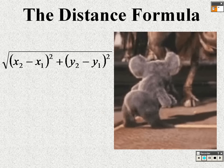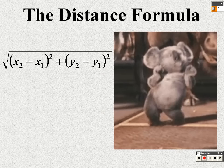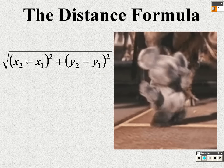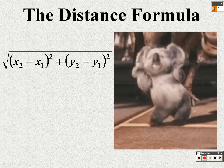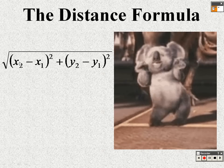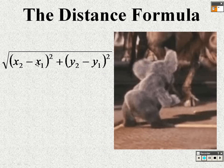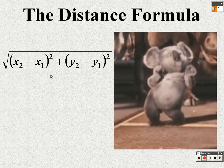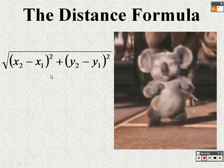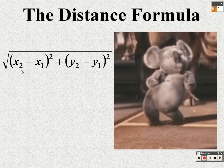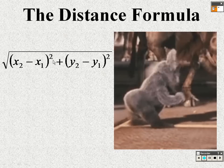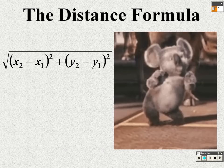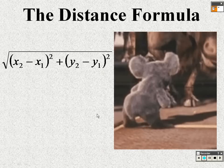Make sure you write down the distance formula because it is very important. It is used with two coordinates — two x's and two y's, labeled with subscripts 1 and 2. The formula is: the square root of (x₂ − x₁)² + (y₂ − y₁)².